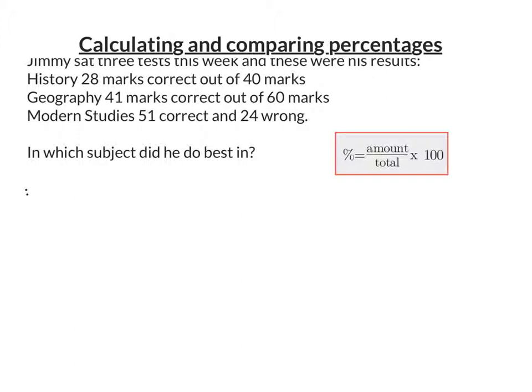The first one we've got is History. So the percentage for History is the number that he answered correct, which was 28, over the total, which is 40, and then times that by 100. I would put that into my calculator and I get 70 percent.